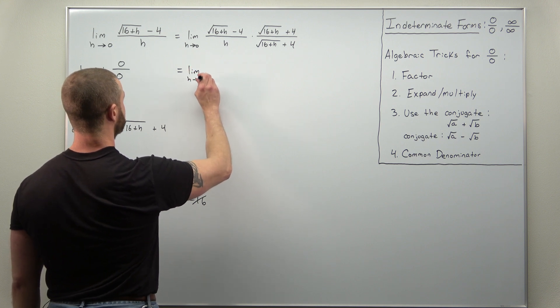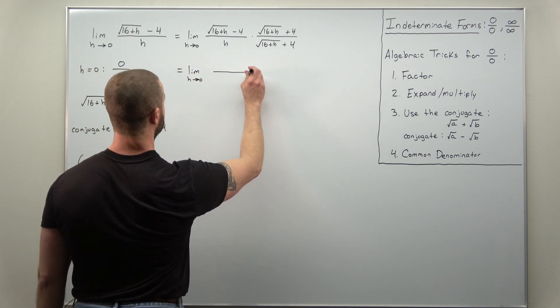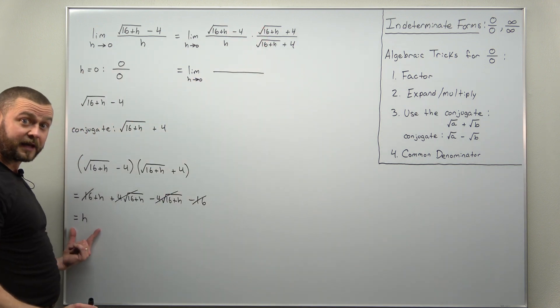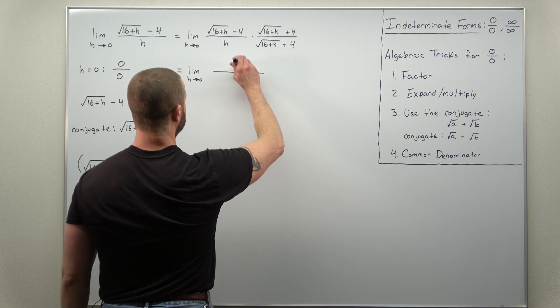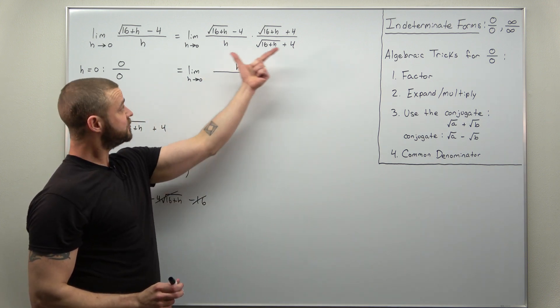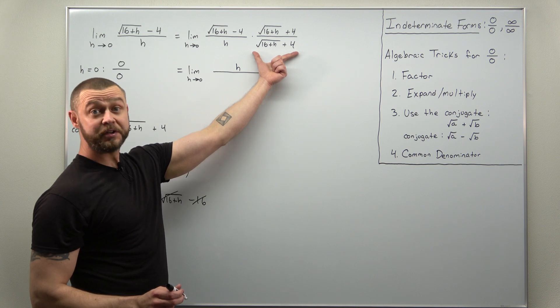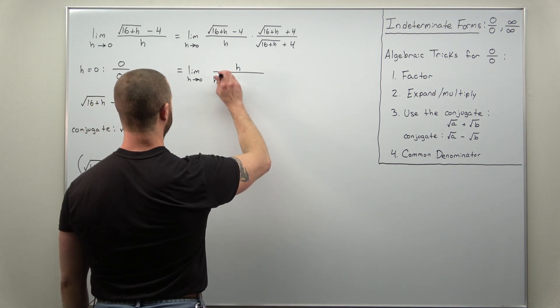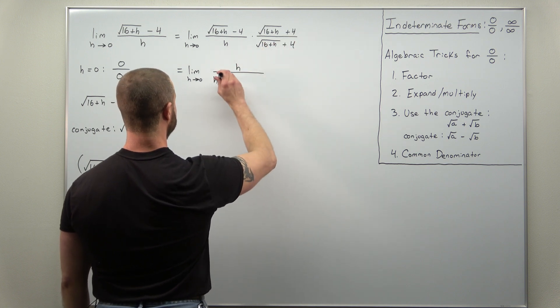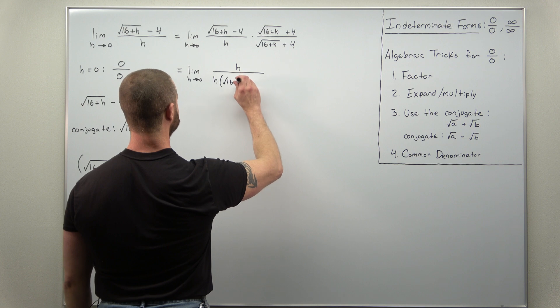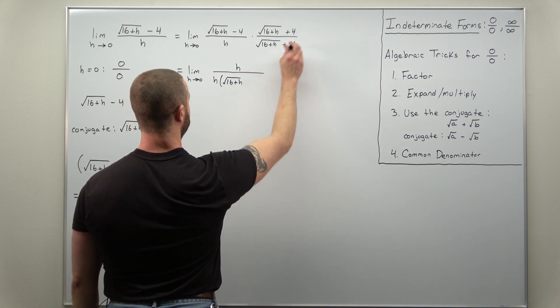We have the limit as h approaches 0. We just multiplied out the numerators. That came out to h. And we're going to keep h in front of this denominator. We're not going to multiply it to each term because it's going to cancel out right now. So let's write this as h times, in parentheses, the square root of 16 plus h, but plus 4.